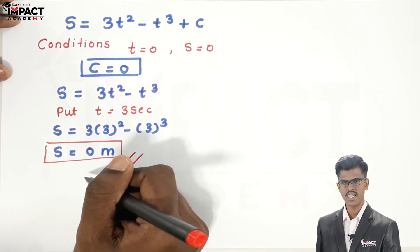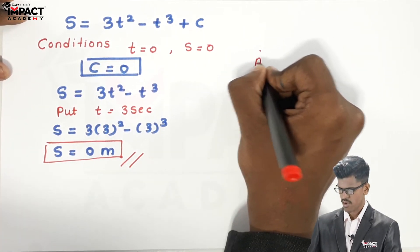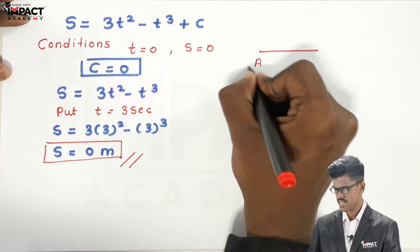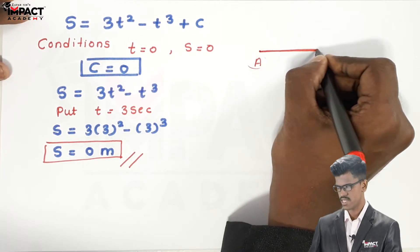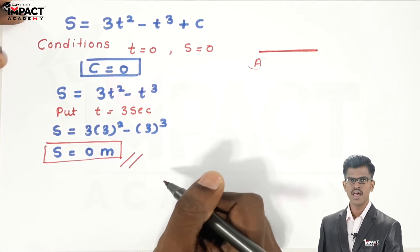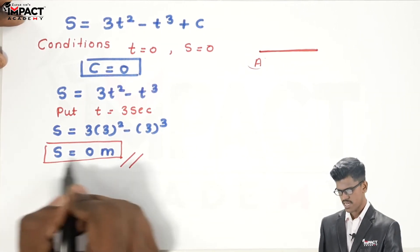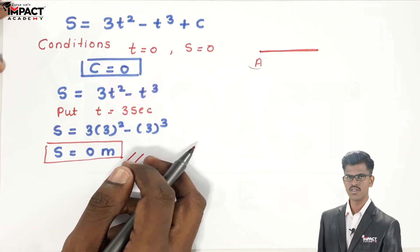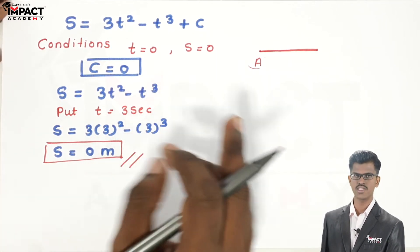What does this answer indicate? If the particle starts motion from point A, it travels some distance and then comes back to its initial position in 3 seconds. Displacement depends on initial and final position, so here the displacement is 0 meters. We have now found two unknowns: the particle deceleration and the position at t equals 3 seconds.